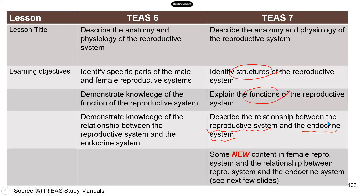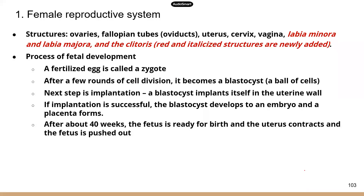Some of the new content I noticed is in the female reproductive system. For example, the process of fetal development, which is new in TEAS 7. And also there's more description on the relationship between the reproductive system and the endocrine system. So we are going to go over some of those updates today. Let's look at the new material for the female reproductive system.